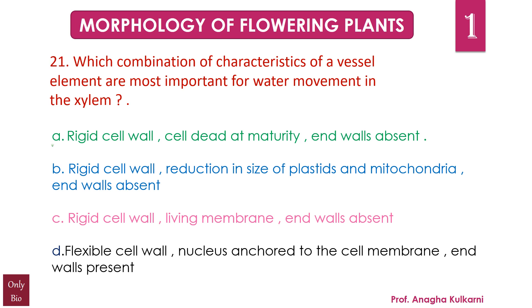The correct answer for this question is A. Rigid cell wall, cell dead at maturity, and end walls absent are the characteristics of a vessel element which are most important for water movement in the xylem.